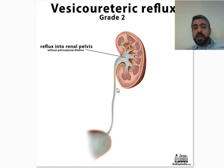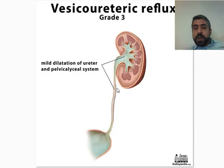Grade 3 is when there is reflux of urine all the way back into the kidney with some mild dilatation of the ureter and the pelvicalyceal system — mild hydroureteronephrosis, not severe. This is Grade 3 Vesico-Ureteric Reflux.